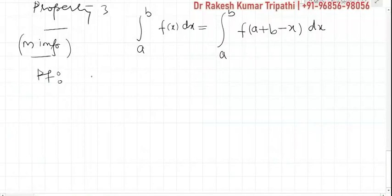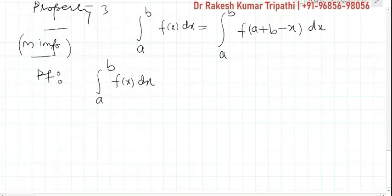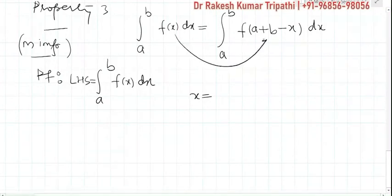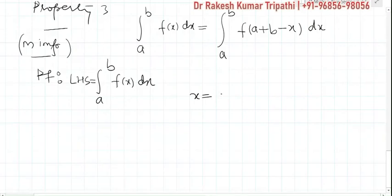We shall start from the left hand side: integral from a to b of f(x) dx. Now we need to put x equal to something. It is clear that x should be replaced by a + b − x, but directly we cannot write x = a + b − x. So we shall consider another variable t and with the help of t we shall try to prove this.